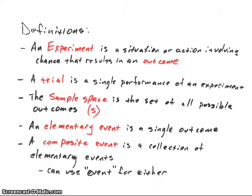In relation to experiments, let's talk about some definitions. An experiment is a situation or action involving chance that results in some type of outcome. So you're doing something that you don't know the outcome beforehand, and the result that you get is the outcome.